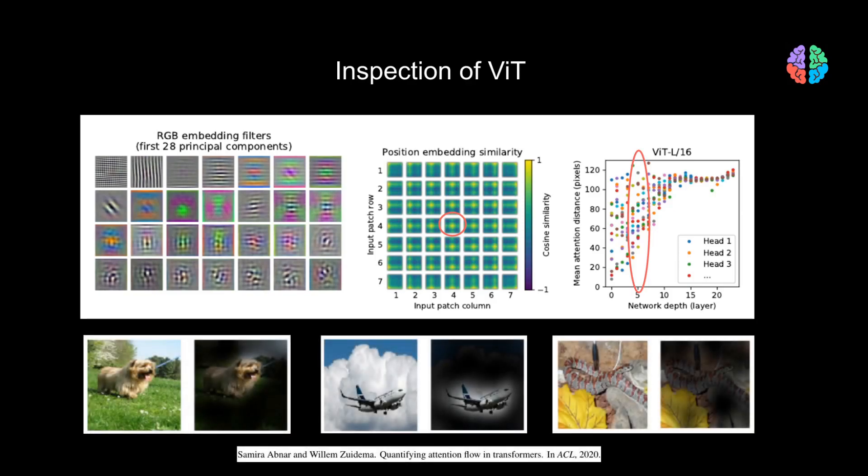Lastly, they show attention maps for some images using what is called attention rollout, proposed in a paper called 'Quantifying Attention Flow in Transformers.' The attention maps indeed make a lot of sense.